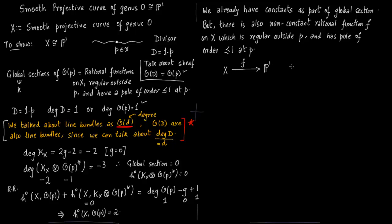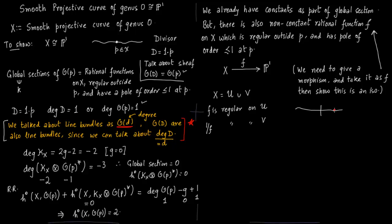Let us construct this morphism from x to P^1 and we will show that degree of f is 1 and therefore there is an isomorphism. Now we need to define this morphism f. Obviously P^1 is covered by two affine lines. You take f as this non-constant rational function and we will use this f to give a proper morphism and show it has degree 1. Say x is u union v. Now v contains the point p and u does not contain point p. So f is regular on u and 1 by f is regular on v. This is point p. Point p is contained in v and you have u here.